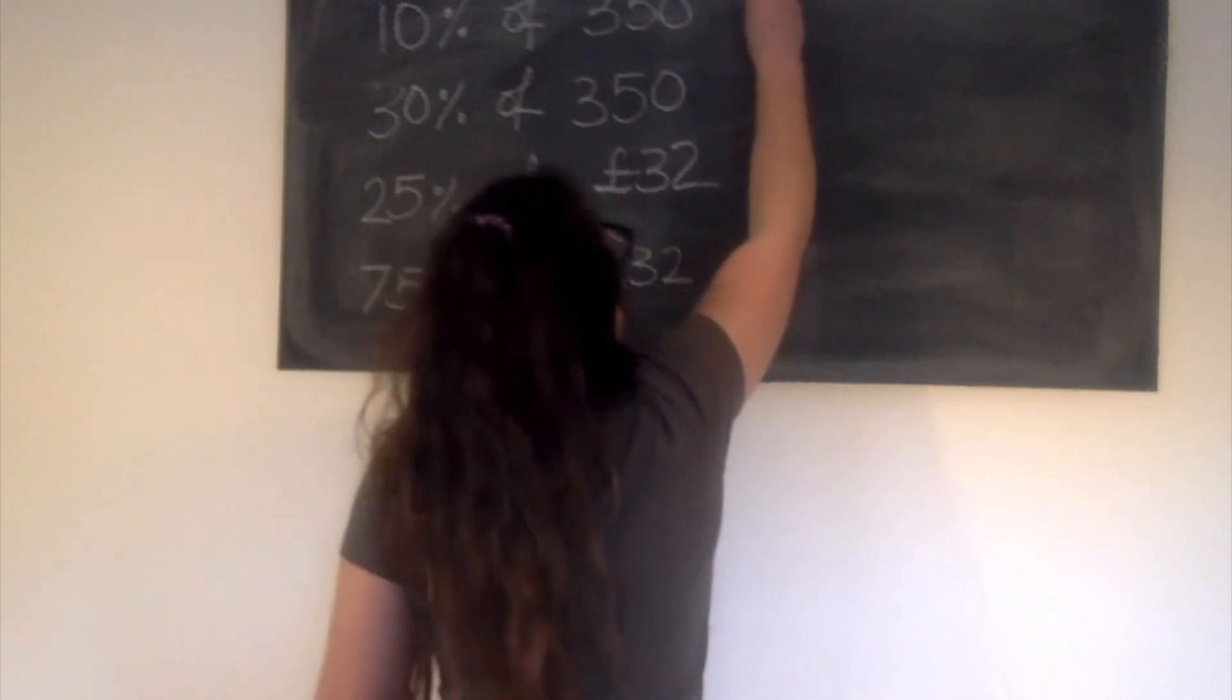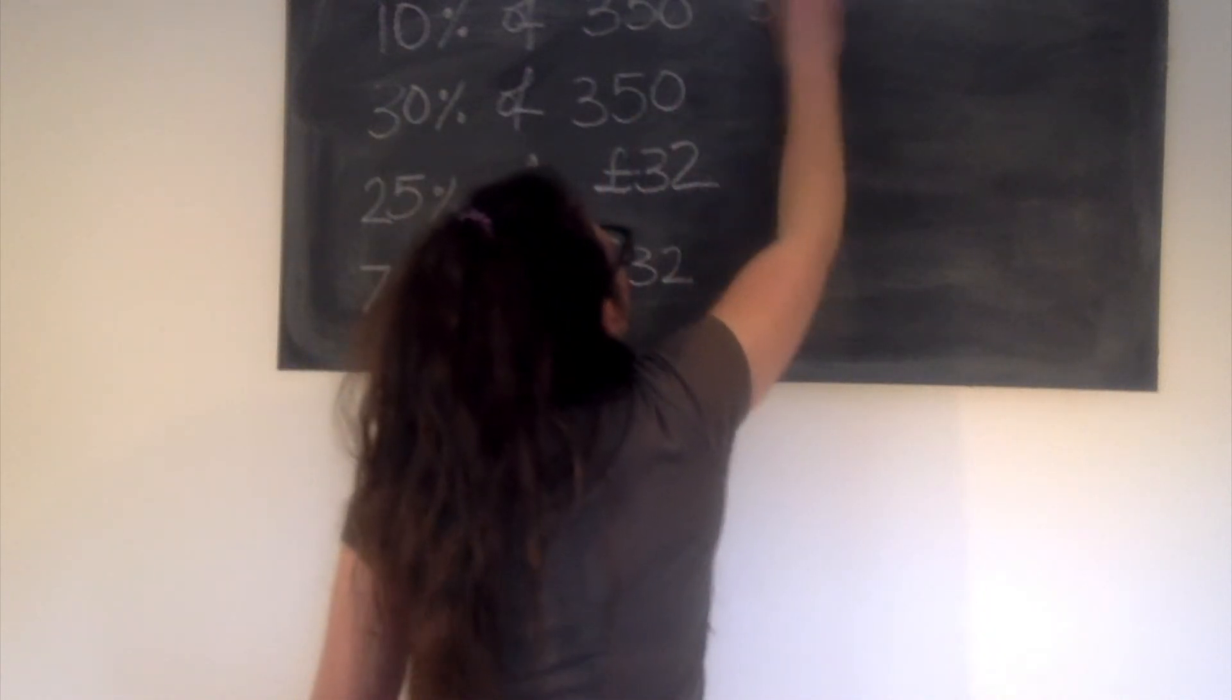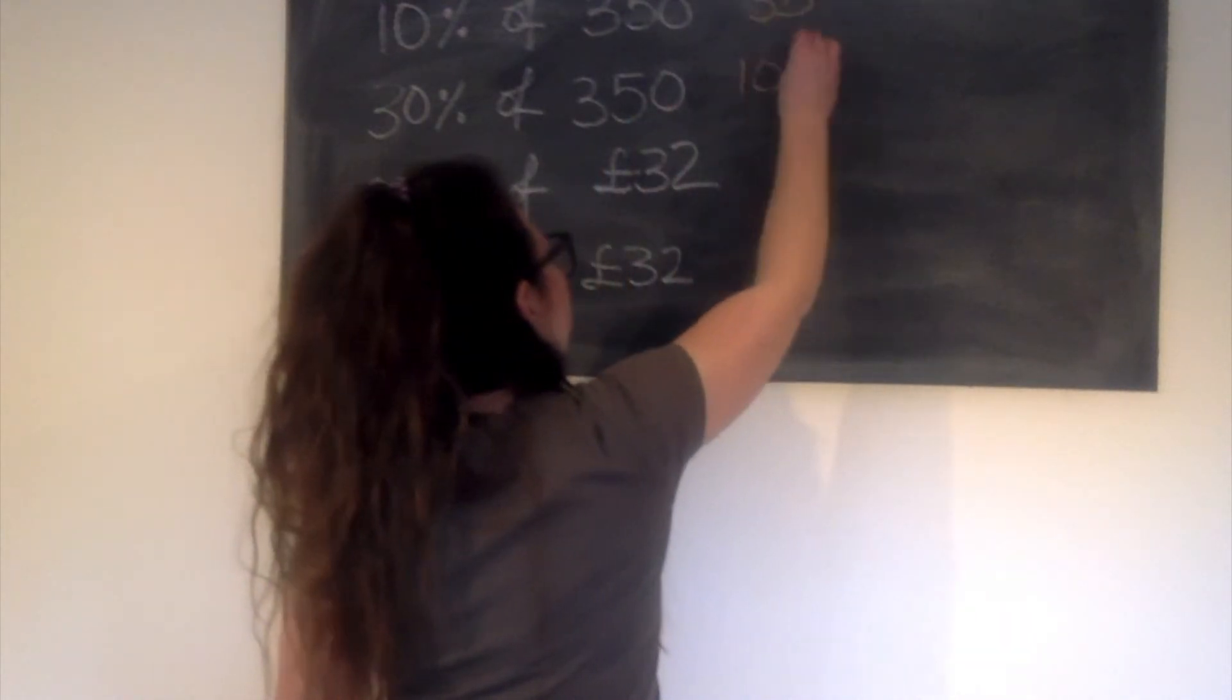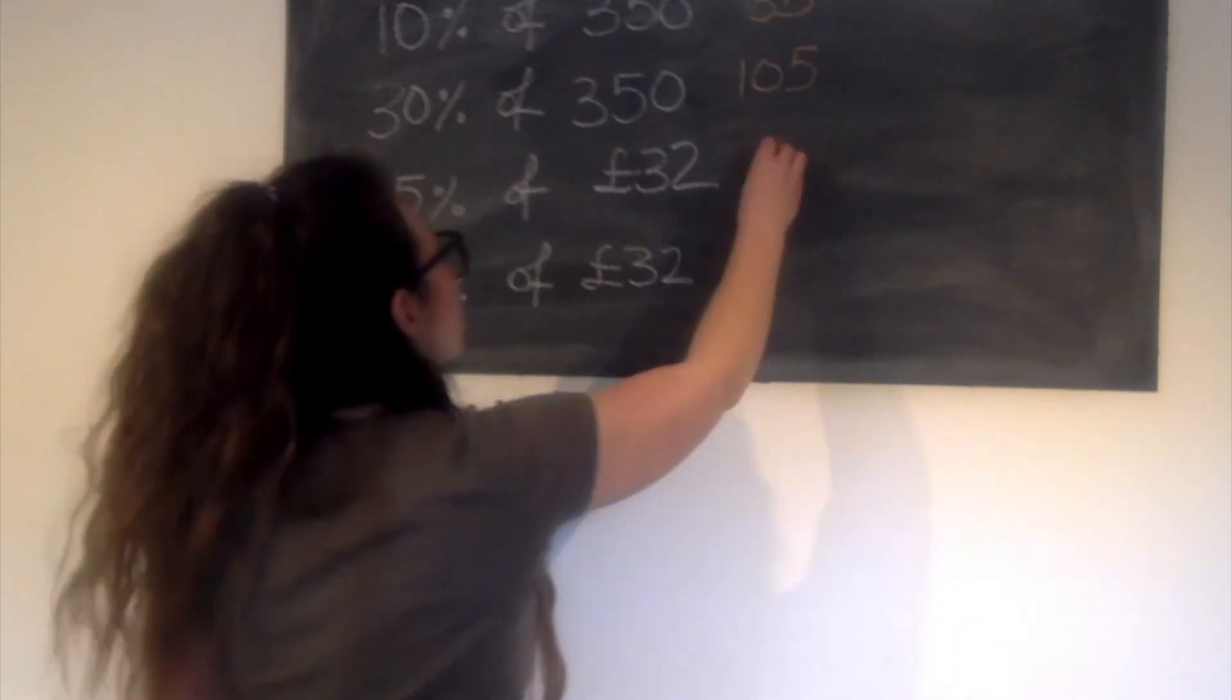Okay, let's go through some answers. So to find 10% we divide by 10, so 10% of 350 is 35. 30% is 3 lots of that, so it's 105.